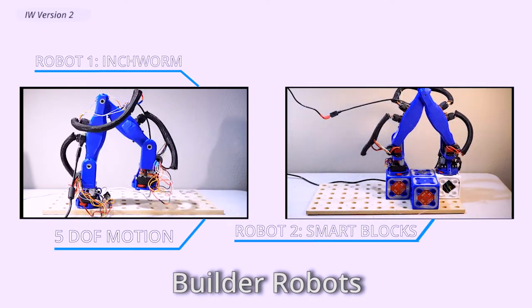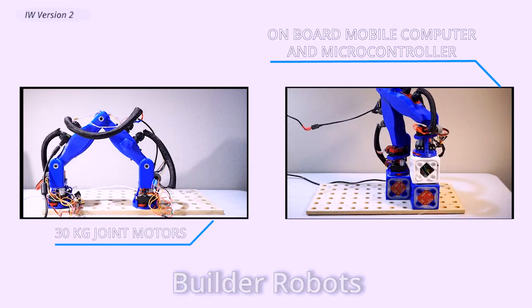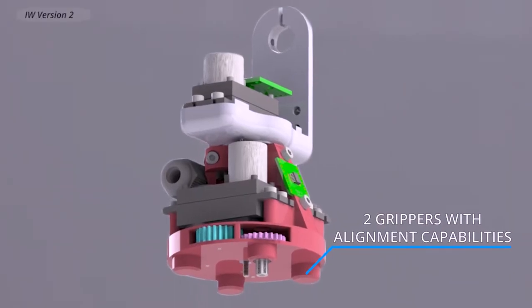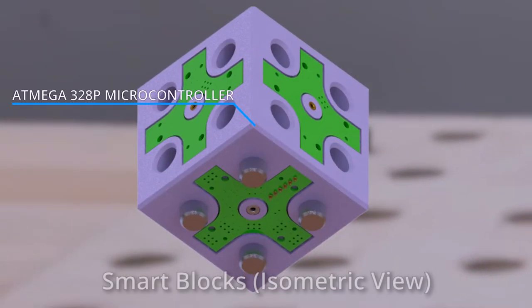The first type is made so that the robots can walk and climb anywhere such as up the sides of buildings or even hang upside down. These robots have special grippers that allow them to move around our second type of robot, our smart blocks.